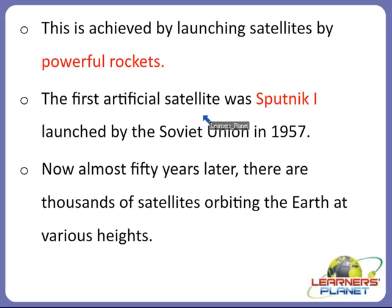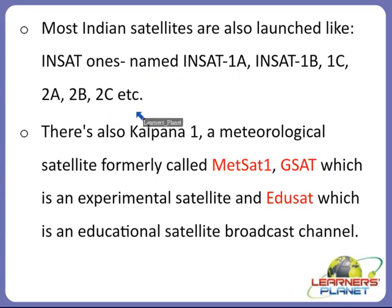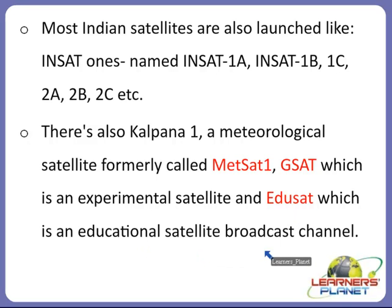So there are a number of satellites that orbit the earth, giving us much information about it. Let us see some of the Indian artificial satellites that have been launched. Most Indian satellites are named INSAT-1s — INSAT-1A, INSAT-1B, INSAT-1C, 2A, 2B, 2C, etc. — for various purposes. There is also Kalpana-1, a meteorological satellite formerly called METSAT-1. There is GSAT, an experimental satellite, and EDUSAT, an educational satellite broadcast channel, because of which we are able to study smartly.